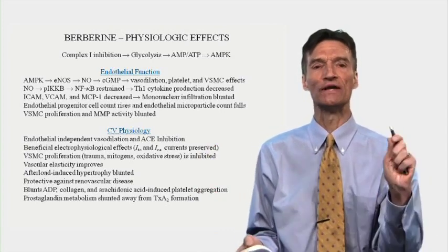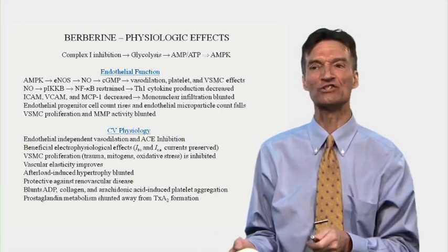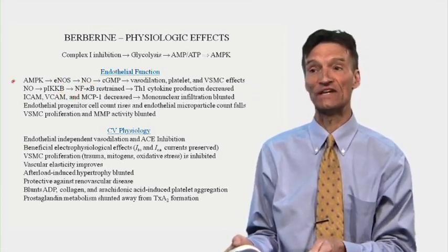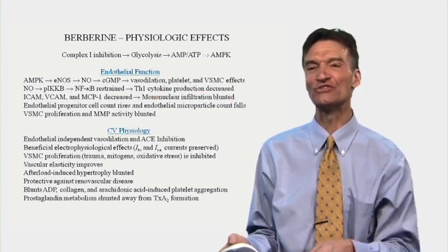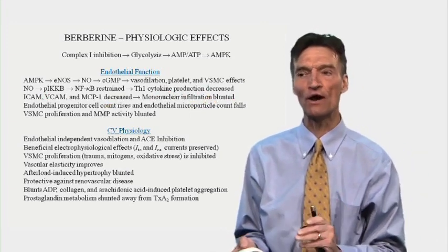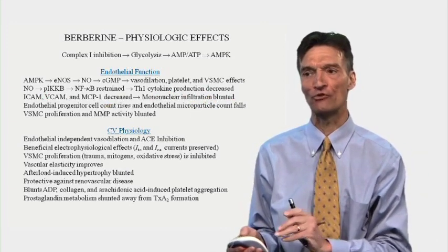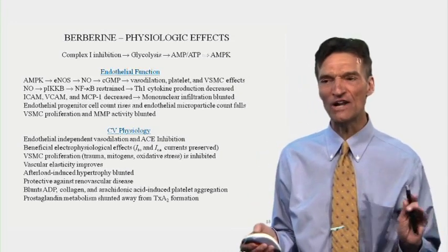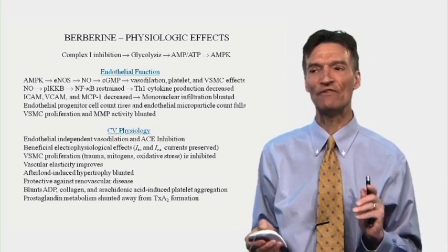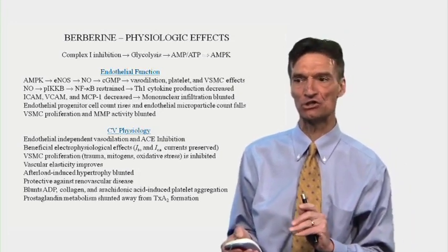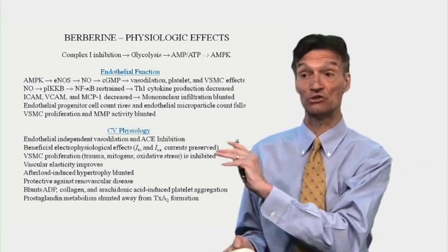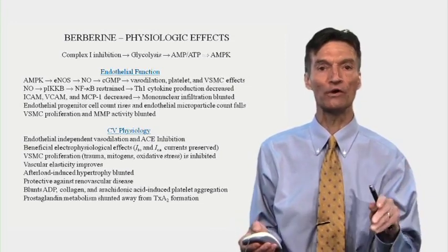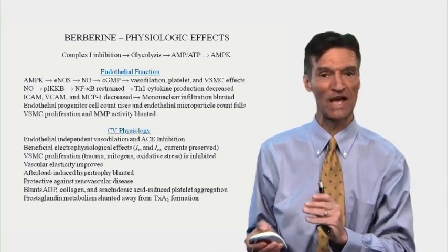Endothelial progenitor cell count rises. Endothelial microparticle count falls. Vascular smooth muscle proliferation and matrix metalloproteinase activity is blunted. There's endothelial-independent and endothelial-dependent vasodilation. Berberine is an ACE inhibitor — it blocks the conversion of angiotensin-1 to angiotensin-2. Beneficial electrophysiologic effects. We block proliferation of vascular smooth muscle, important in preventing plaque development or restenosis. Our arteries are more elastic. We blunt left ventricular hypertrophy in response to high blood pressure and protect against renal vascular disease.